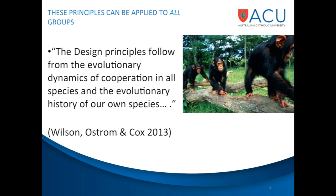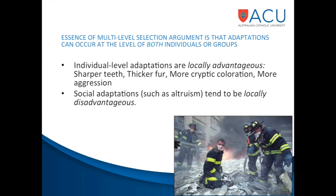Following Eleanor Ostrom's work — which was all about people managing common pool resources — David Sloan Wilson's contribution was to broaden that and say that evolutionary theory would predict these principles should apply for any group that has to cooperate, even in other species. The essence of the multi-level selection argument is that adaptations can occur because of selection occurring both at the individual level and also at the group level. Basically, it's trying to explain why we should ever evolve altruistic or cooperative tendencies, because individual level adaptations are locally advantageous — like sharper teeth or more aggression.